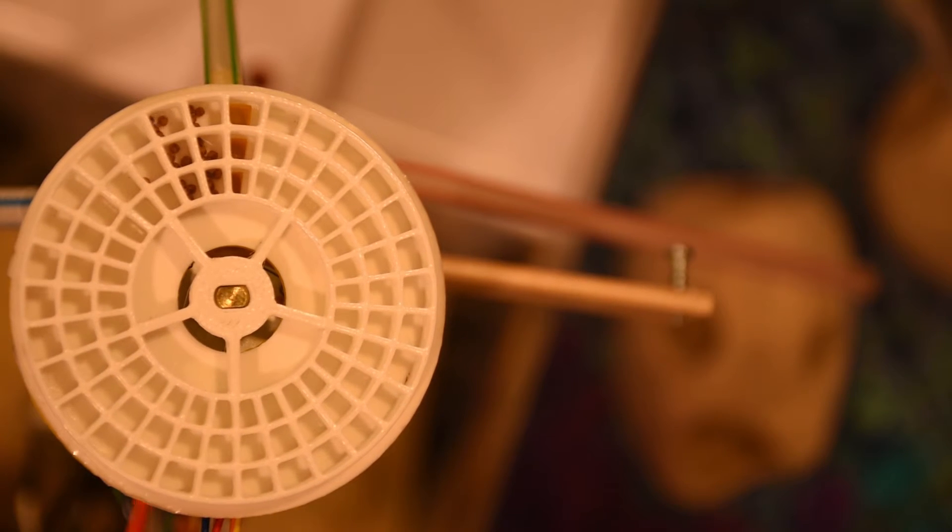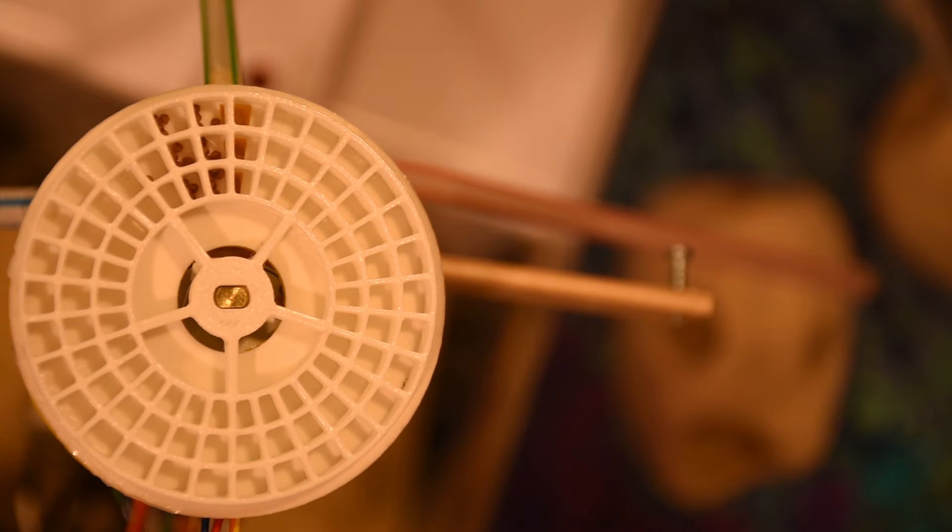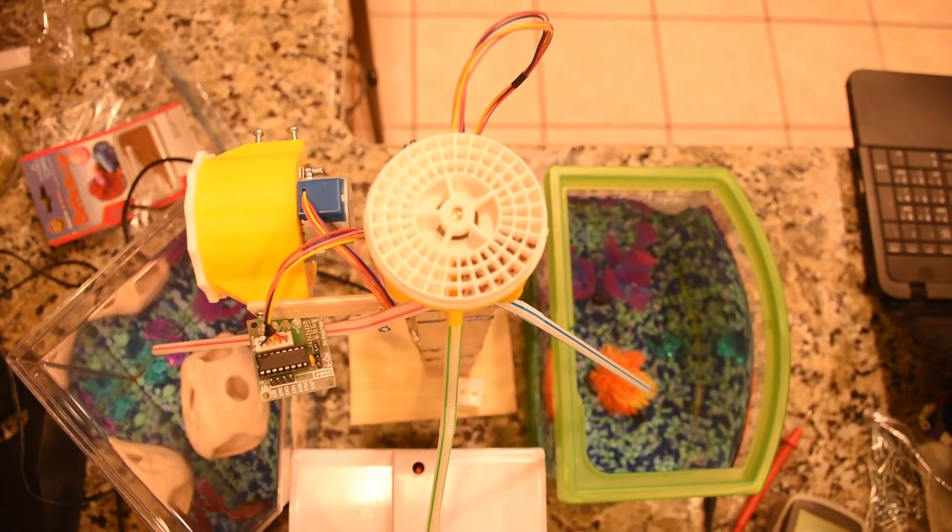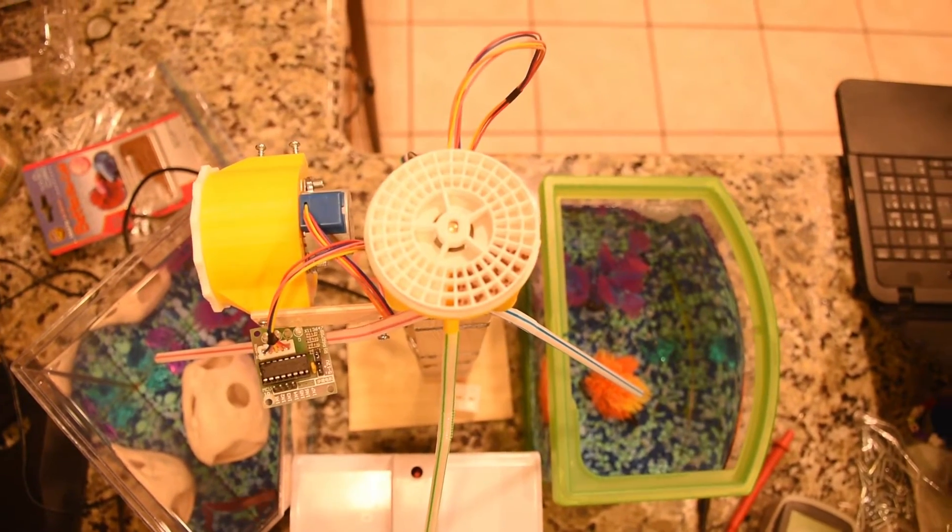The stepping then stops, and a transistor cuts power to the control board. This saves a lot of power because there's no holding torque required. The food drops through three holes in the base and down a straw toward each tank.